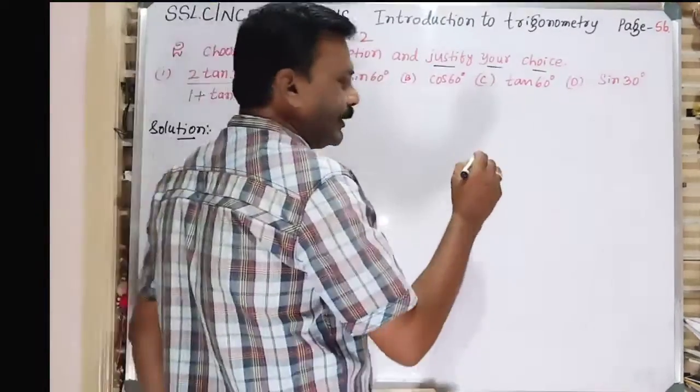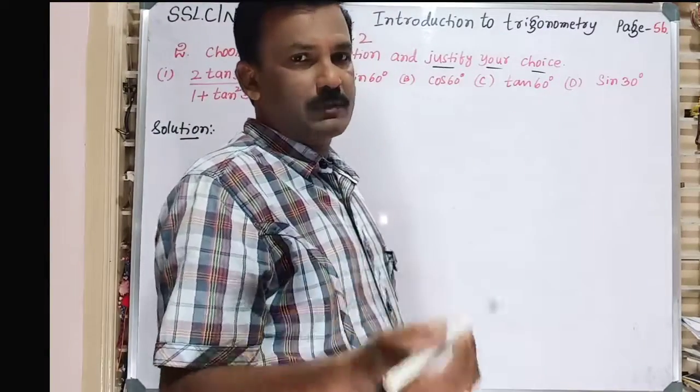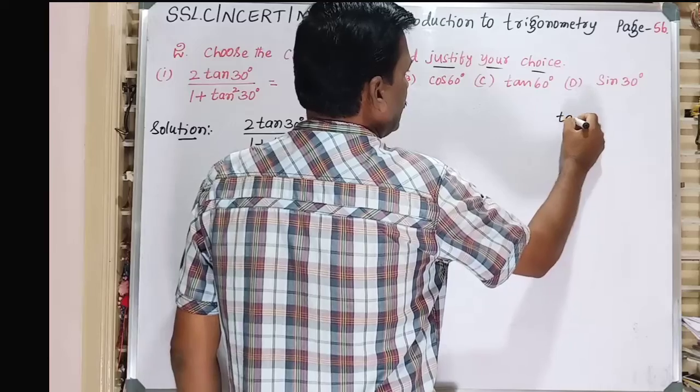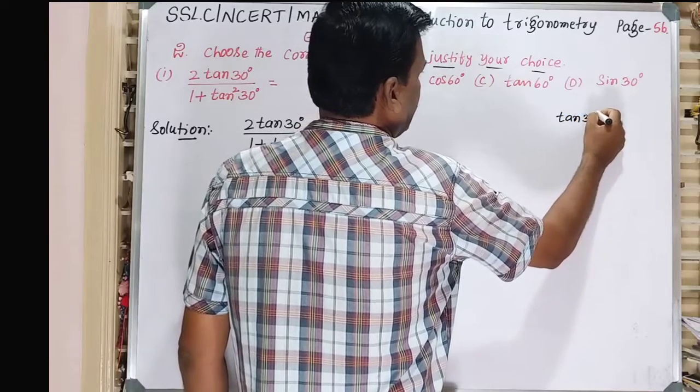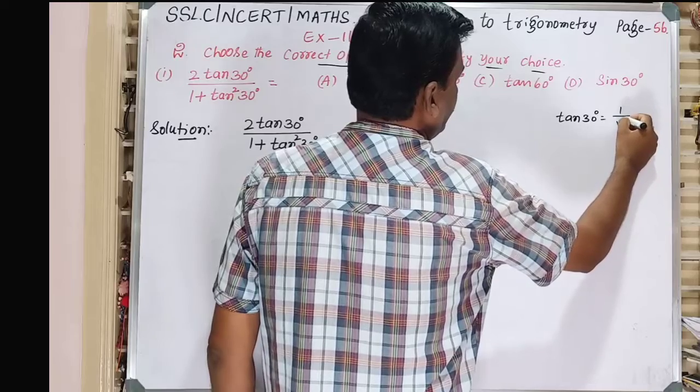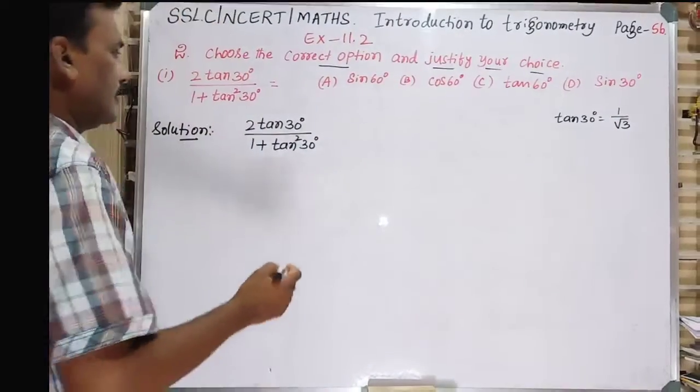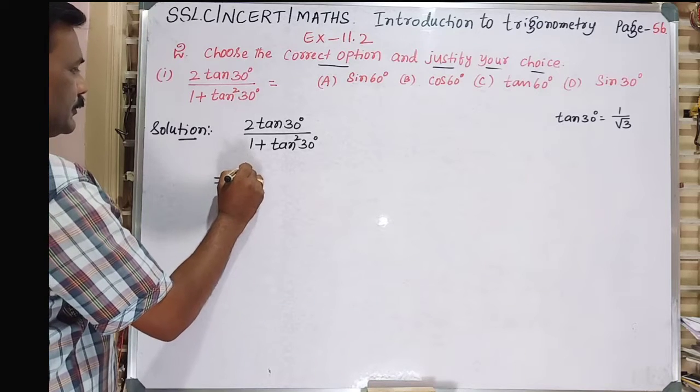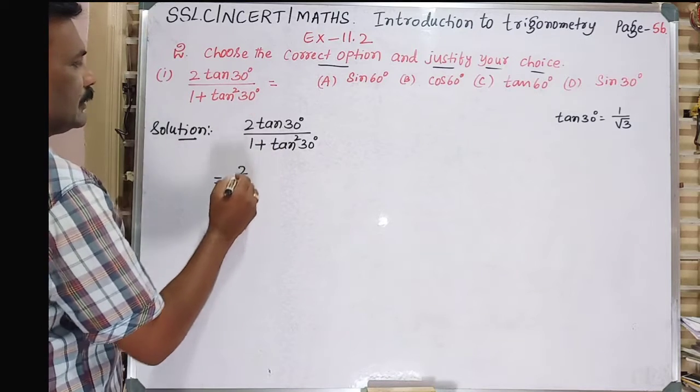For tan30° we'll use the trigonometric ratios of some specific angles. That is, tan30° is equal to 1/√3.